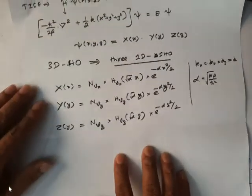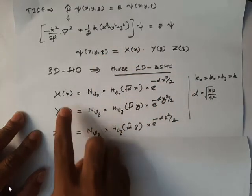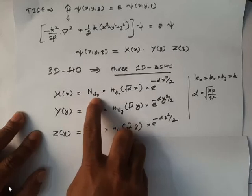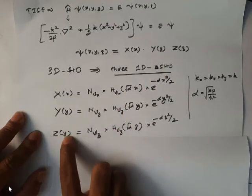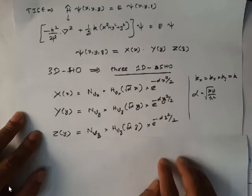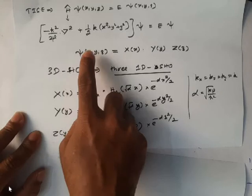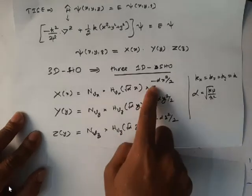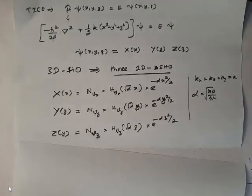If we apply separation of variables, ψ is a function of x, y, z. You can separate this function into three functions: one depends only on x, the second depends only on y, and the third depends only on z. If you substitute these functions and separate, you will get three one-dimensional simple harmonic oscillator equations. Each function — ψx, ψy, ψz — is given by a normalization constant depending on the quantum number, the Hermite polynomial, and a Gaussian function. Multiplying all three gives the total wave function.